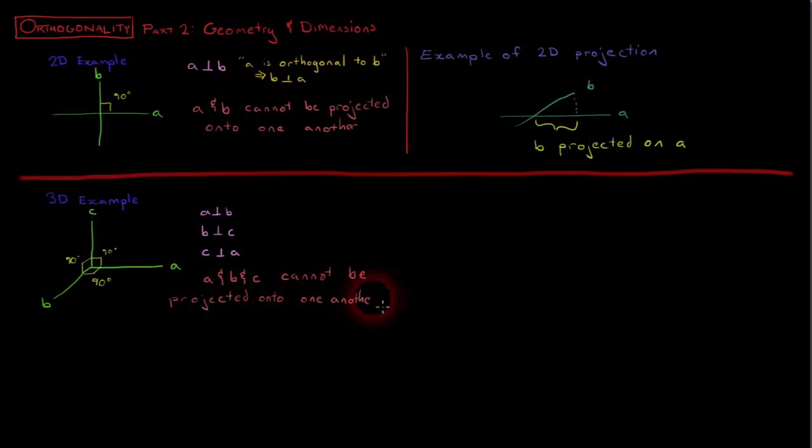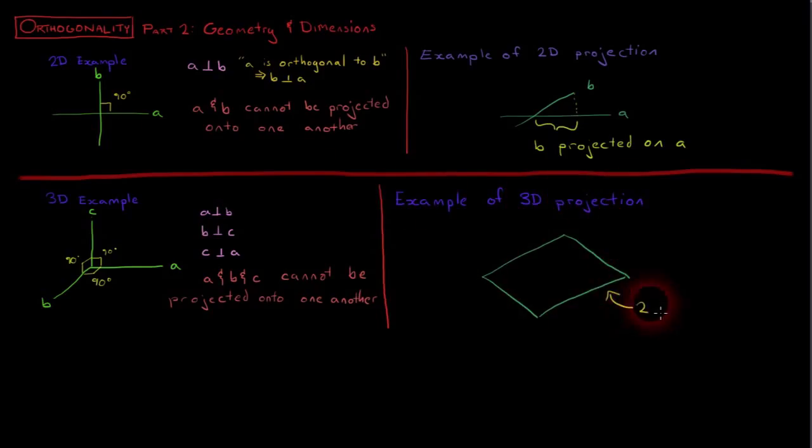Projection in 3D is a natural extension of projection in 2D. You may consider projection between the lines individually, or you can combine two lines and call their combination a surface and consider the projection of the third line on a surface.